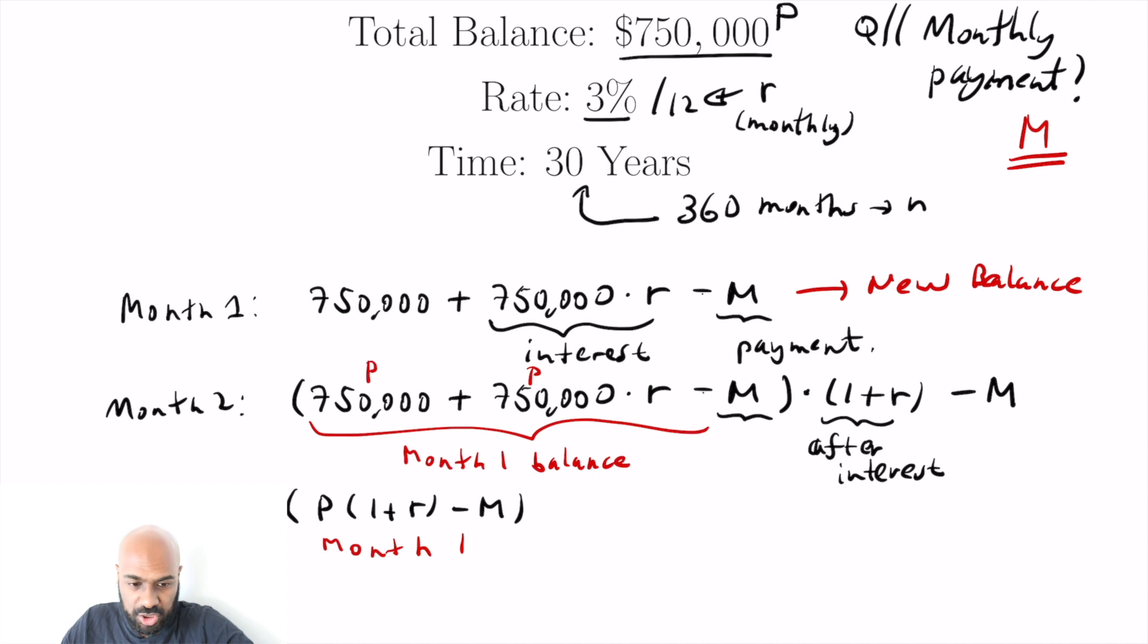So I'm trying to get this like in general here. Then we multiply by one plus R and then we subtracted M again. Okay, cool. So if we expand this out, trying to figure out what pattern you get, it should be P times the quantity one plus R squared. And then we subtract M times one plus R and then we subtract M again.